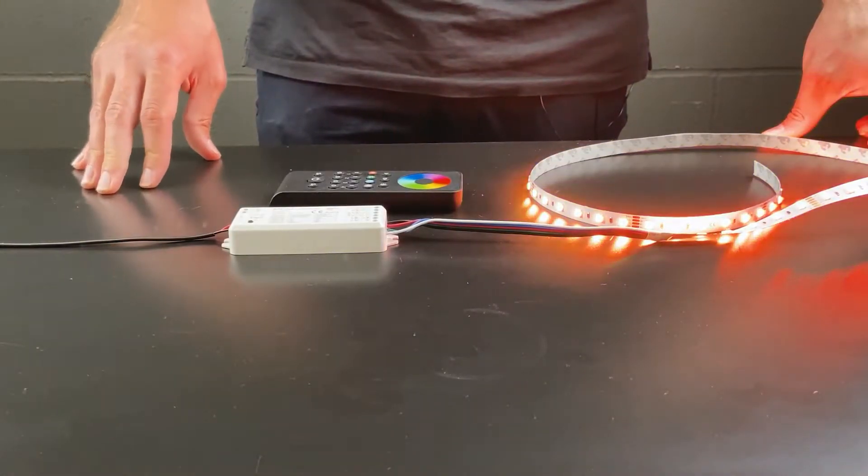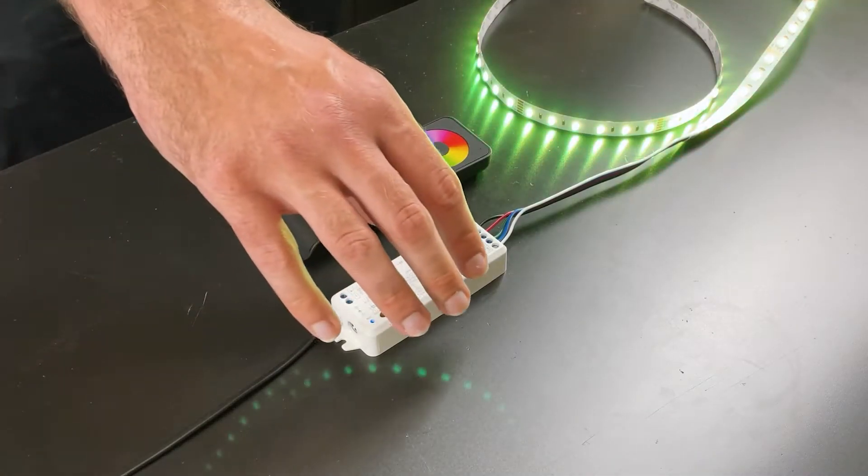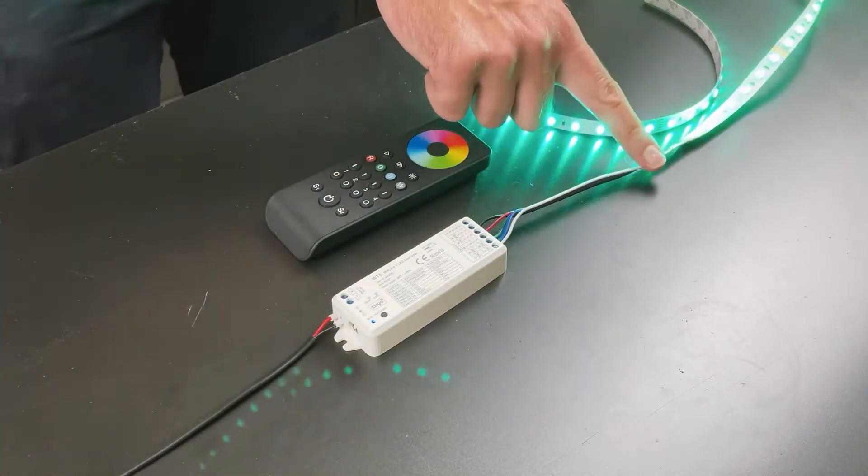The WT5 is an inline product so it is wired in between the driver and the LED tape.